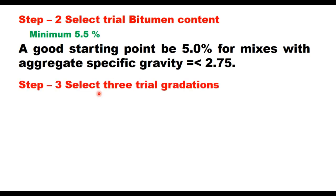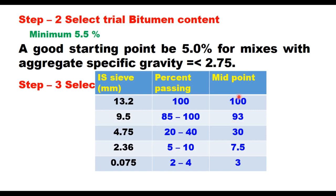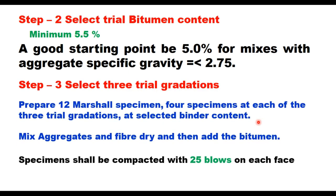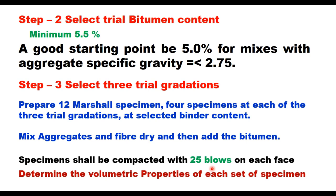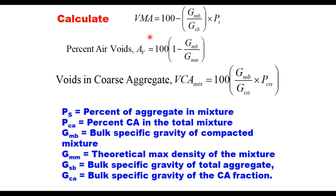Step 3 is to select three trial gradations within the range suggested in IRC 129. One gradation can be at the midpoint, the second on the coarser side, and another on the finer side. Then prepare 12 Marshall specimens — 4 specimens at each of the three trial gradations — at the selected binder content. Mix aggregates and fiber dry, then add bitumen. Specimens will be compacted with 25 blows on each face, since high air voids are required. Then determine volumetric properties, calculating VMA, percent air voids, and VCA for each set.